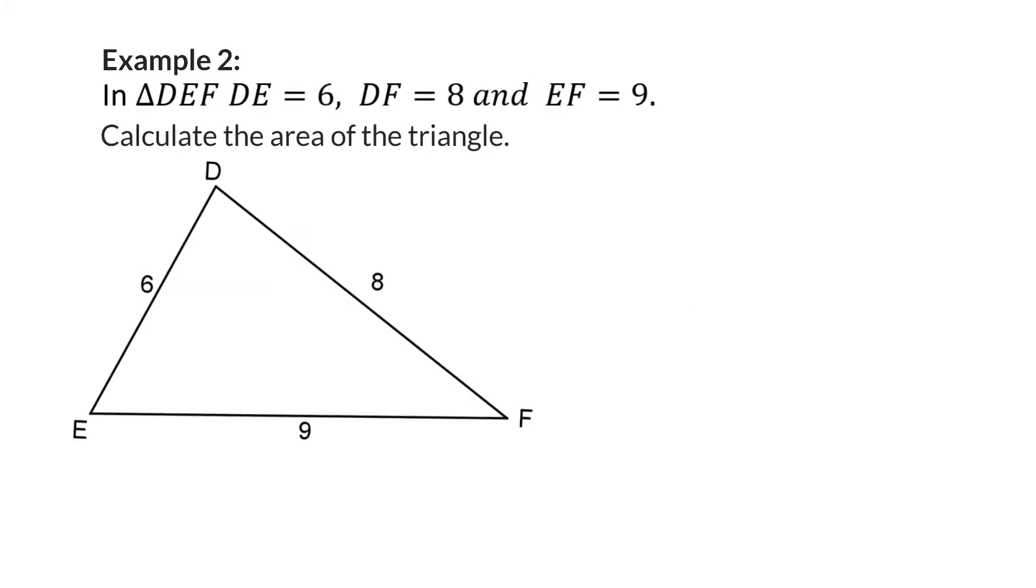Example 2: In triangle DEF, DE = 6, DF = 8 and EF = 9. Calculate the area of the triangle. In this triangle we do not have any perpendicular height but we also don't have any angles. Therefore at the moment neither of the two formulas for area are possible.